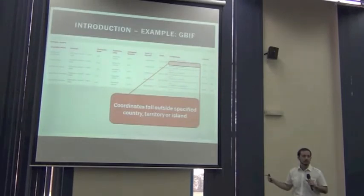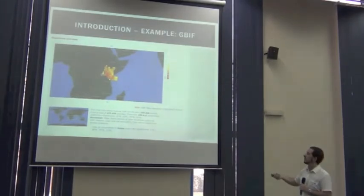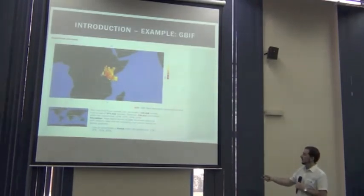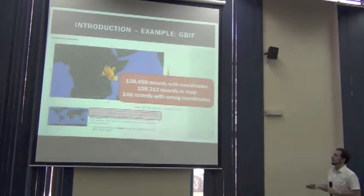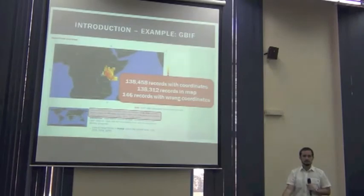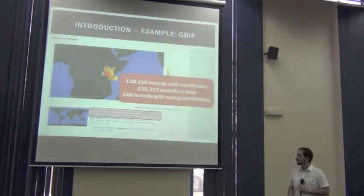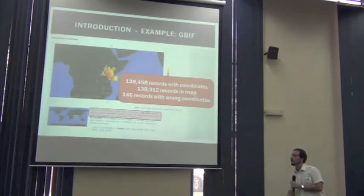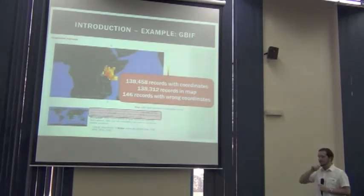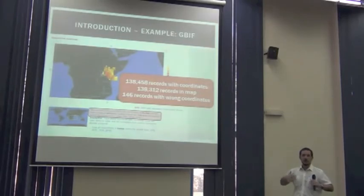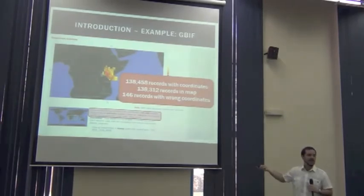If you want high-quality data, you shouldn't use this record. In the example of the Kenyan records, in the log here there are some numbers. The first is the number of records with coordinates in the collection. The second is the number of records shown in the map. They do not match — there are 146 records that have coordinates but do not fall on the map. This is what GBIF means by serving partial data: they are not giving all available information because some records are clearly wrong, based on the flags we have seen.